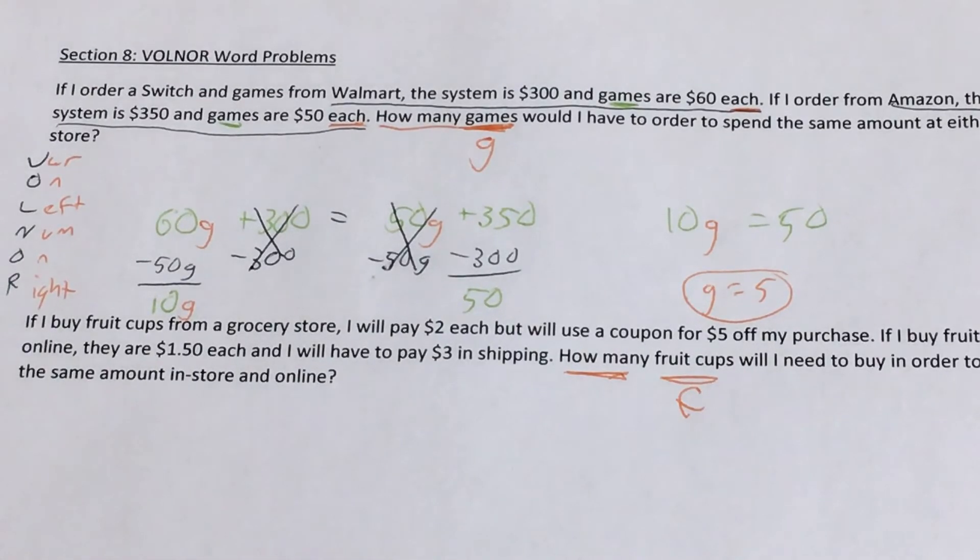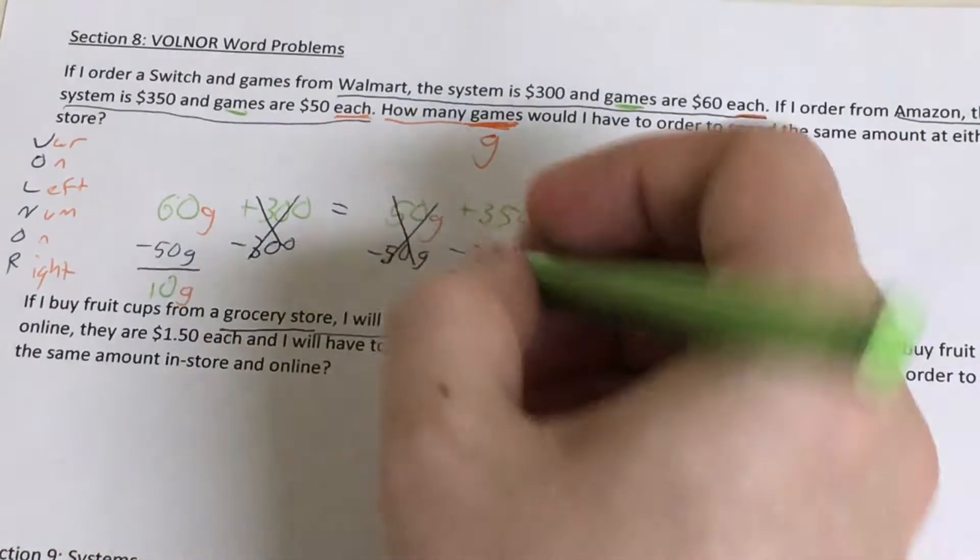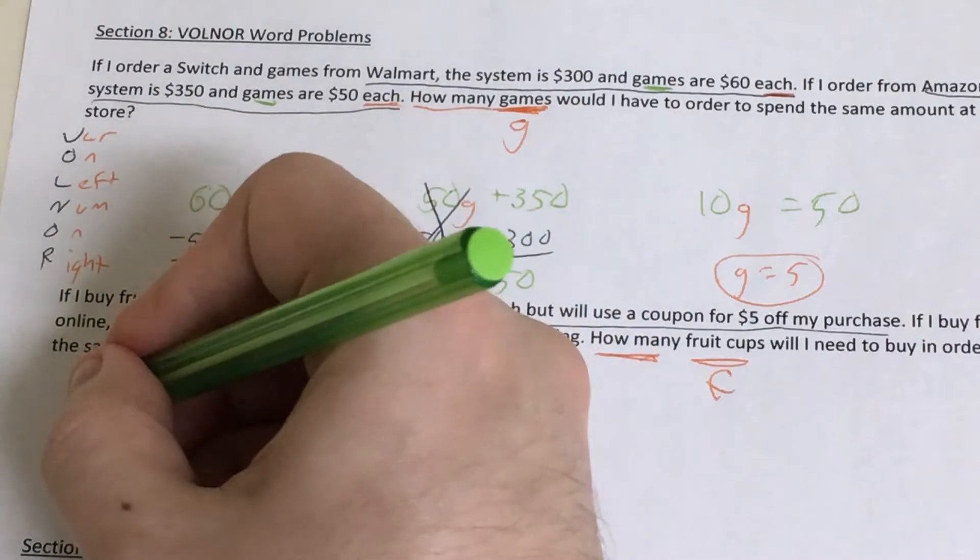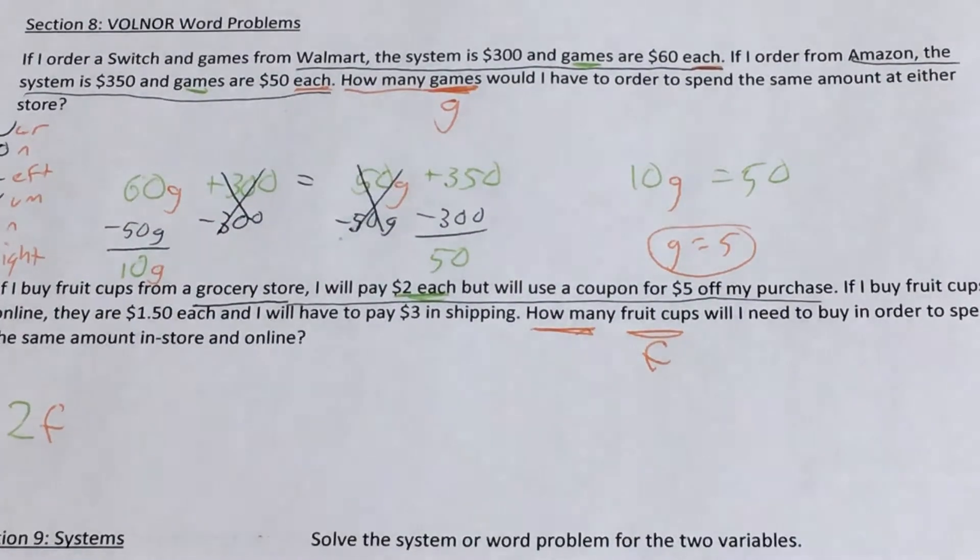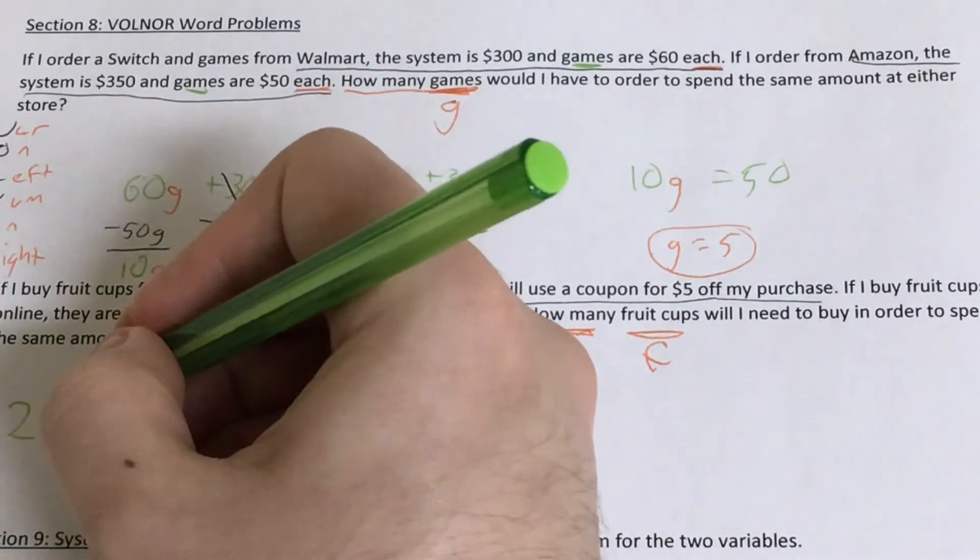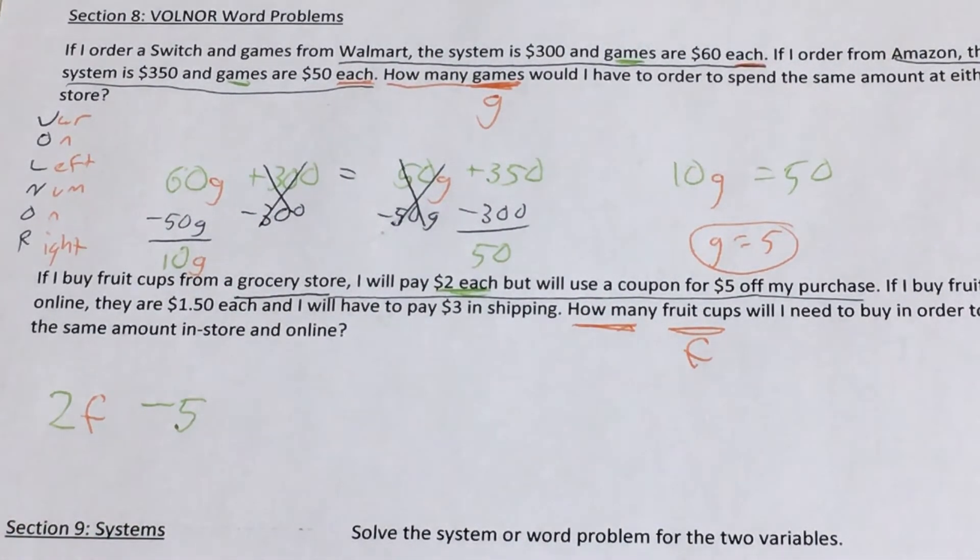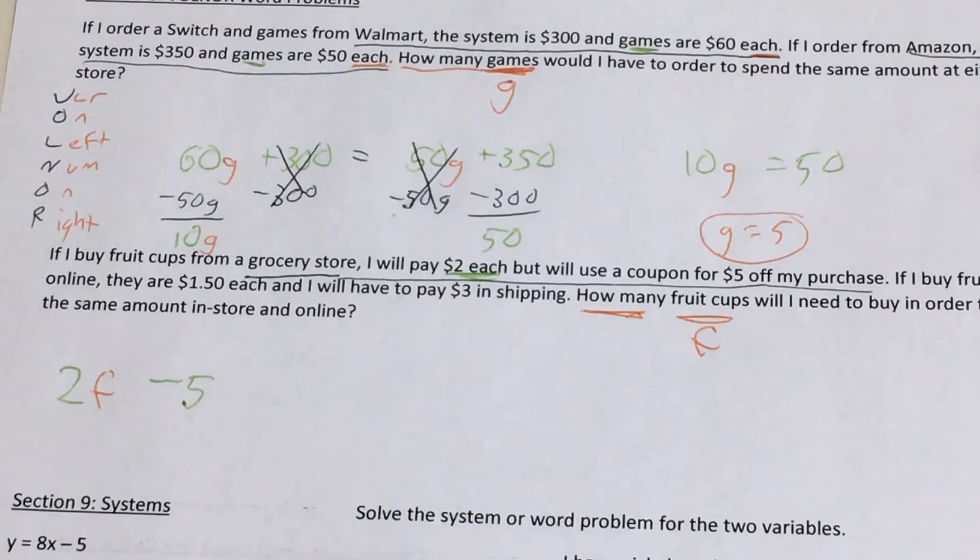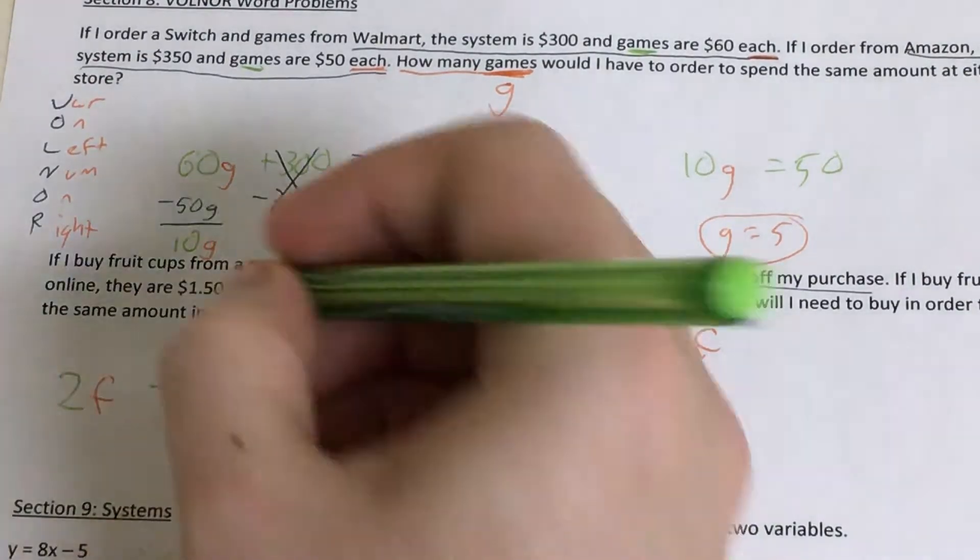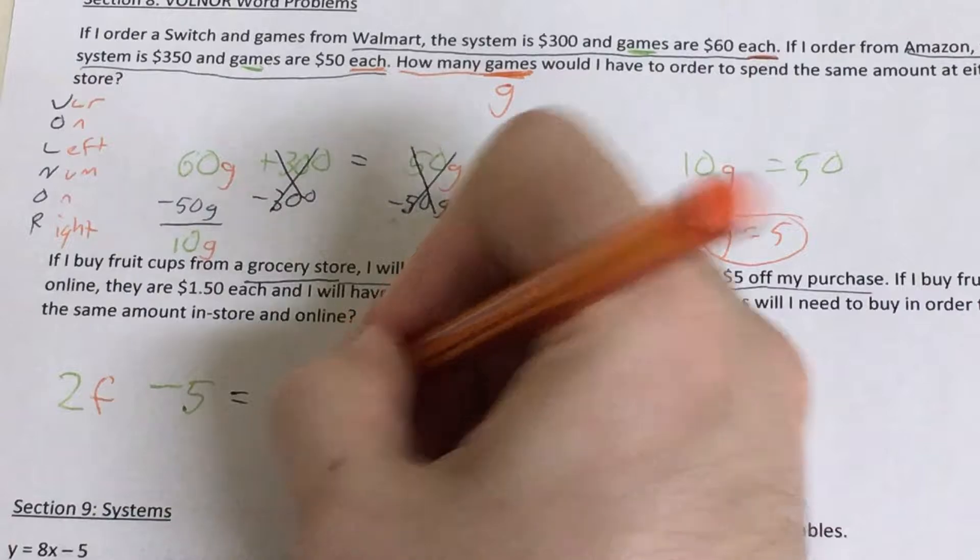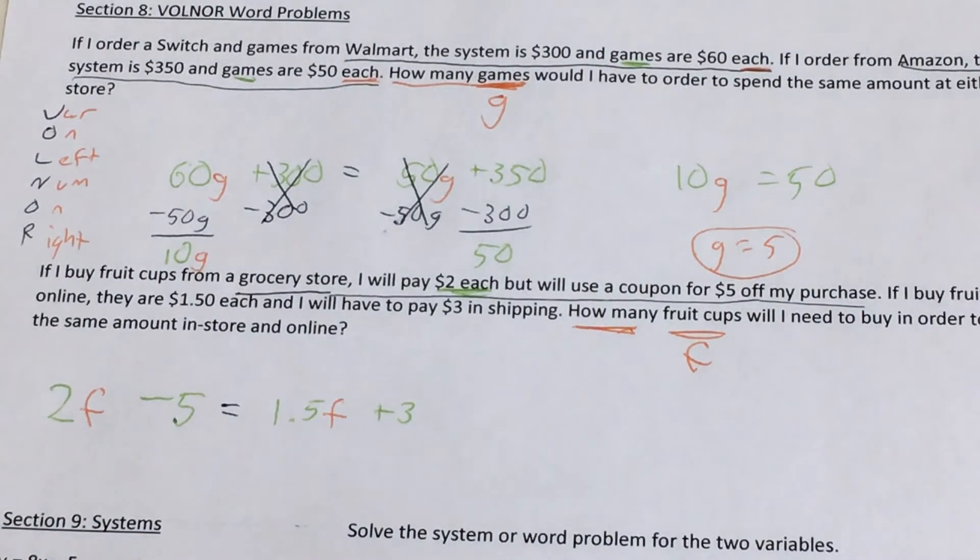And then I look other places in the problem, and I see that if I'm dealing with a grocery store, I'll pay $2 each, $2 per fruit cup, but I can use a coupon for $5 off my purchase. So that $2 each tells me that if I'm looking at a grocery store, it'll be 2F. But if I use a coupon for $5 off my purchase, I'm thinking of money as a positive quantity right now, even though I'm spending it so it's going out of my bank account. So if I use a coupon, that's going to take $5 off my purchase, giving me this first expression, 2F minus 5. If I buy them online, they're $1.50 each, and I'm going to have to pay $3 in shipping. Which means that if I buy online, $1.50 each is going to translate to $1.50 for each fruit cup or pack of fruit cups. And then if I have to pay an extra $3 in shipping, that's going to be plus 3. So this was the hard part, setting up this equation. Now we're just going to go ahead and use VOLNAR.